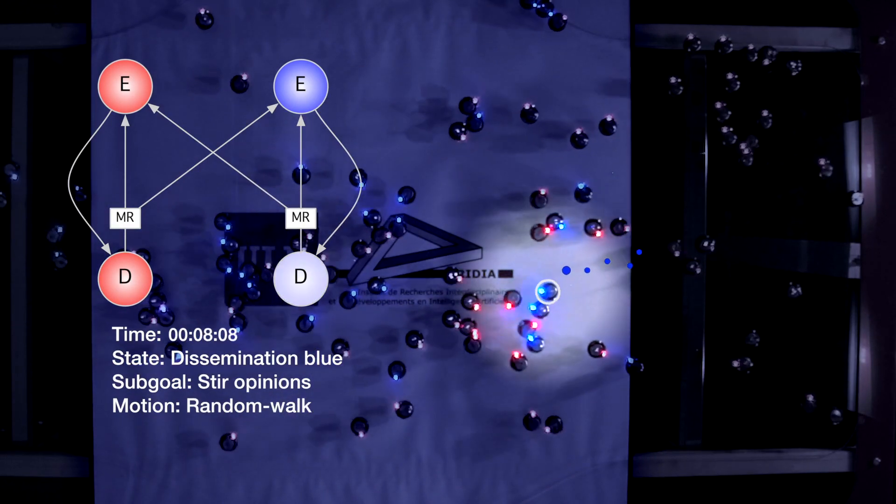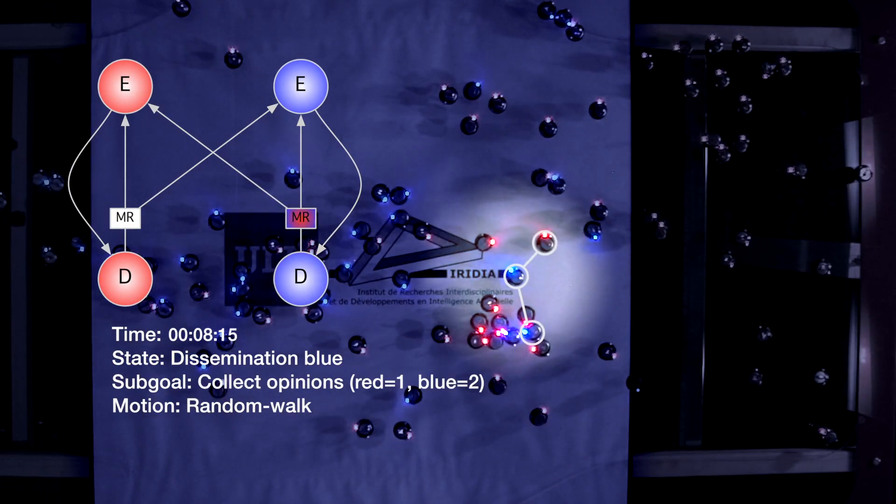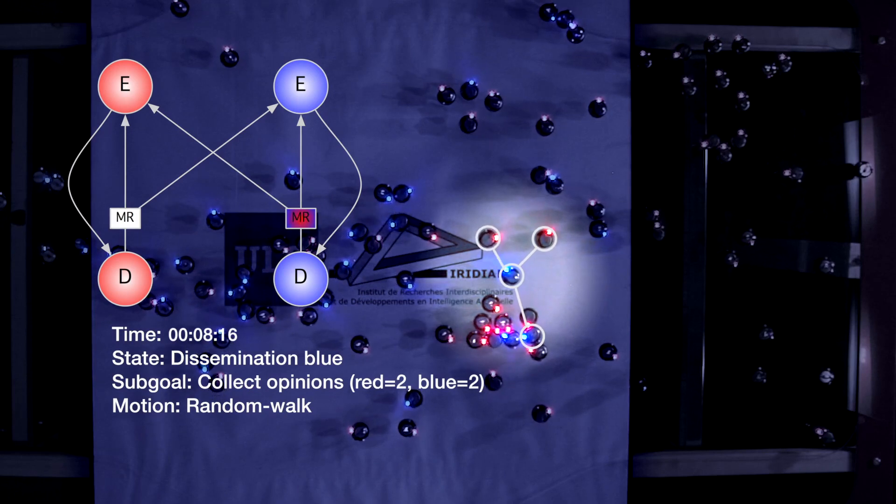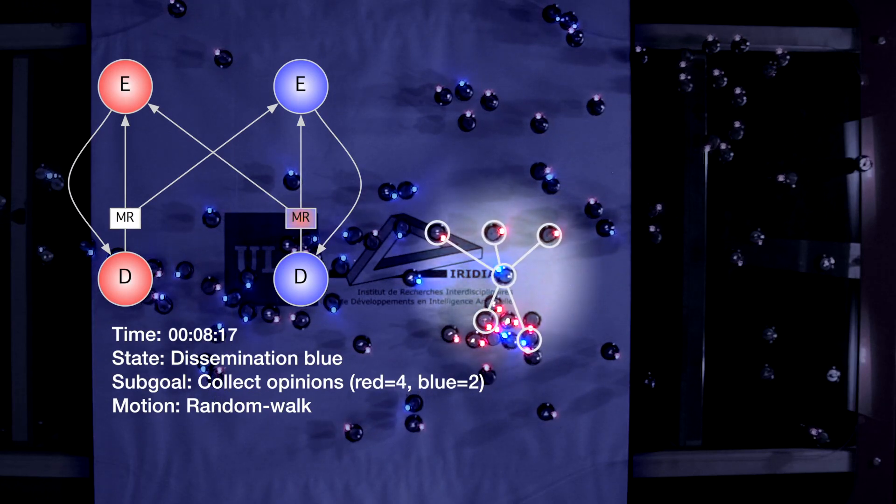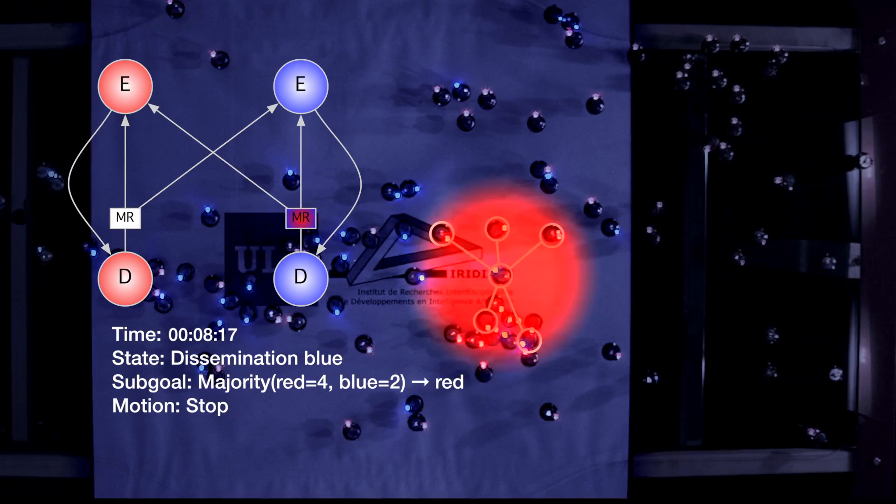Before moving to the exploration state, the robot collects the preferences of its neighbors. It then applies the majority rule to update its preference, which determines the site it will explore next.